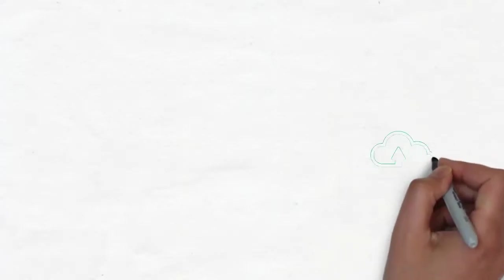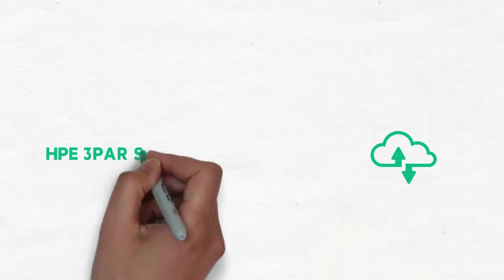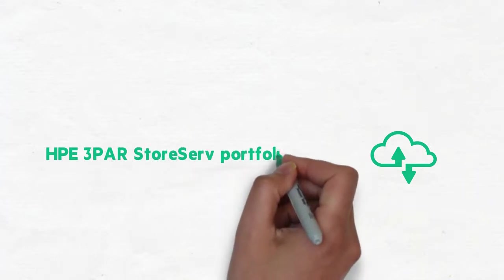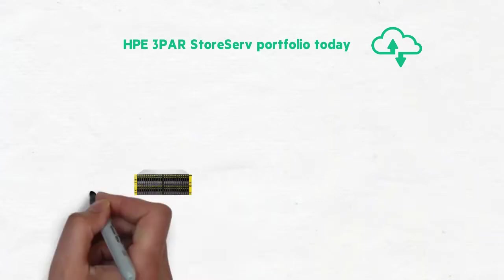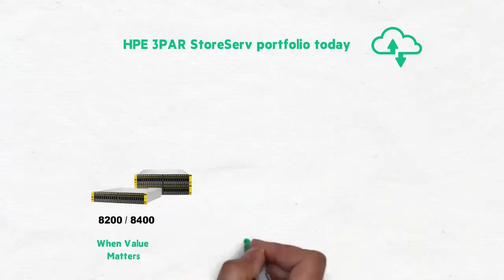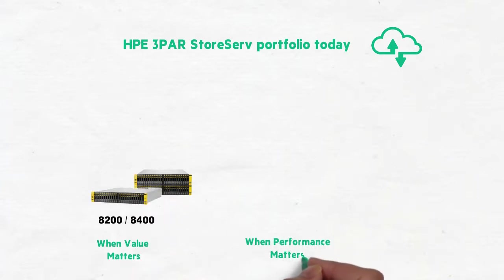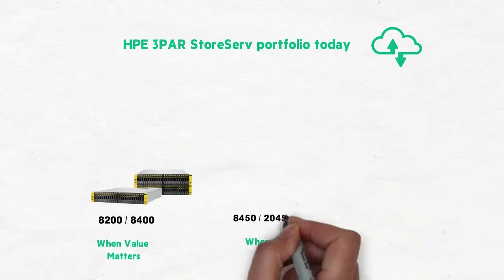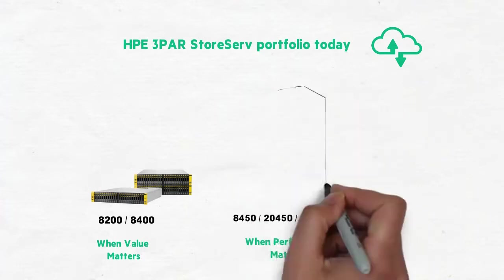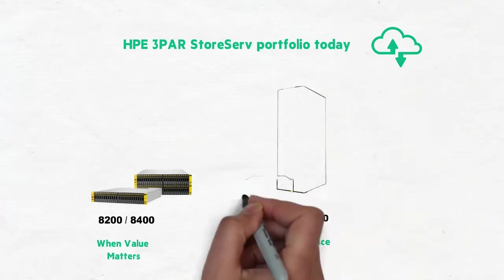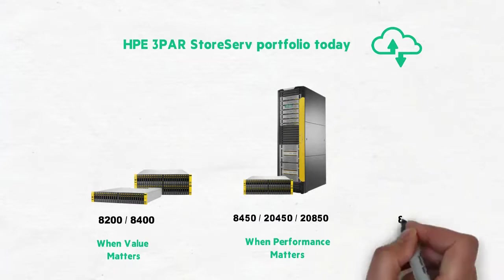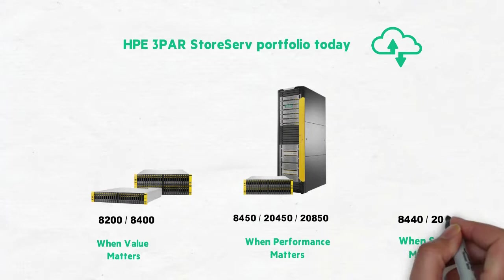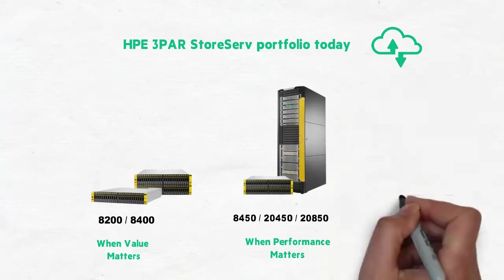HPE 3PAR StoreServ is a single storage architecture for applications, virtualization, and cloud. In the portfolio, we have a solution for when value matters, when performance matters, and when scale matters. Starting at the entry mid-range is the 8000 models when price matters. The all-flash 8450, 2450, and 2850 when performance matters. In the high-end, the 8440 and the 2800 family when scale matters.